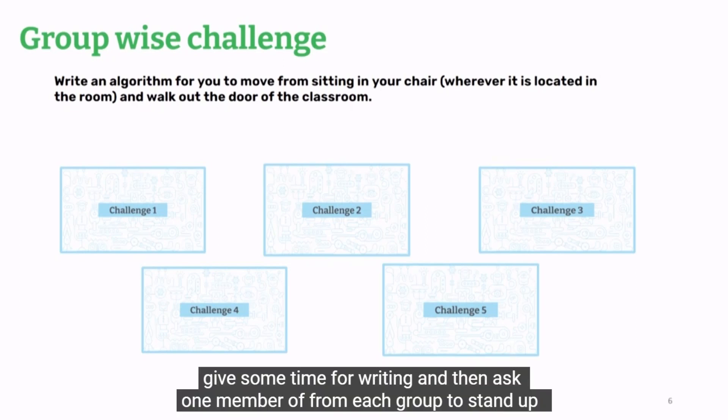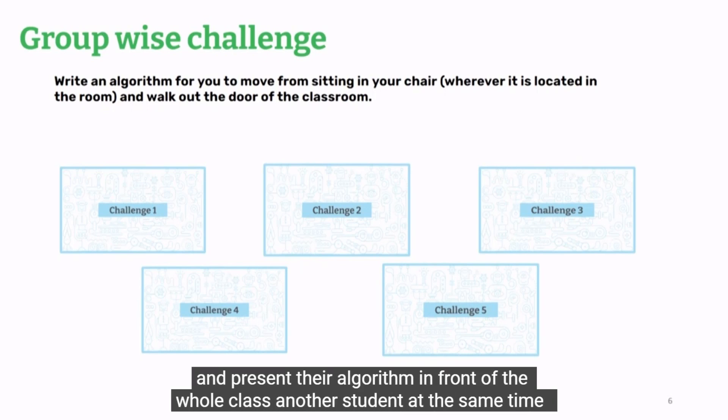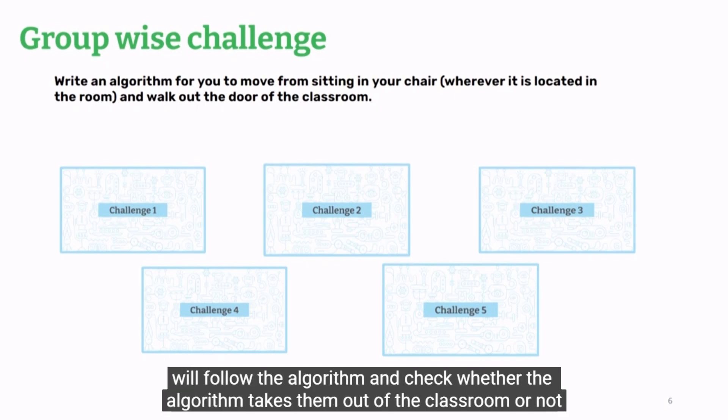Give some time for writing and then ask one member from each group to stand up and present their algorithm in front of the whole class. Another student at the same time will follow the algorithm and check whether the algorithm takes them out of the classroom or not.